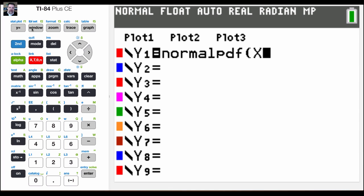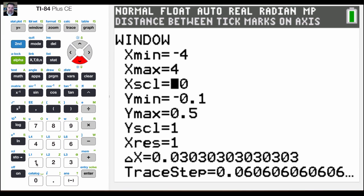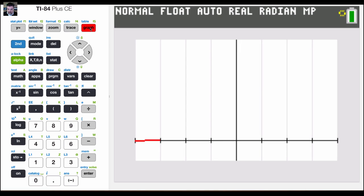Then the other thing you need to do is make sure that you go into the window and go from negative 4 to 4. And then your x scale should probably be at 1. So clear that out, put that at 1. And then for your y value, you want a little bit below 0. So I put negative 0.1 and then about halfway. So I put 0.5 as my y max. Then if I hit graph, it graphs a normal distribution.